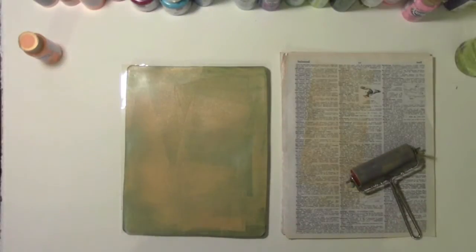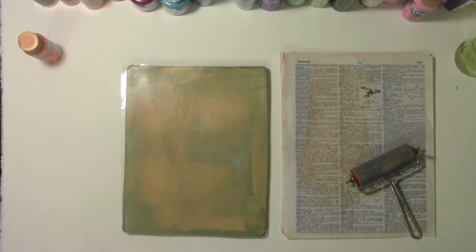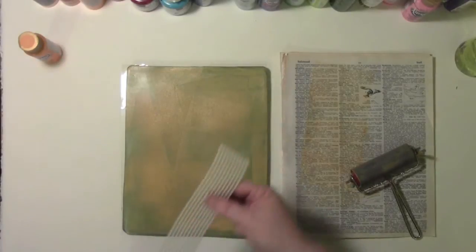To clean off the brayer, all I do is roll it onto my scrap paper. Now the fun really begins. Pulling some of the paint off. You can use just about anything you can find.